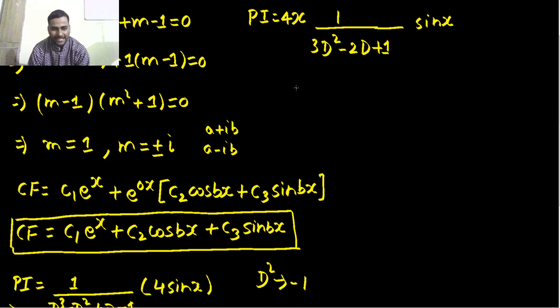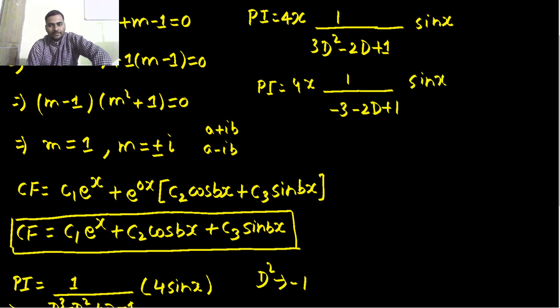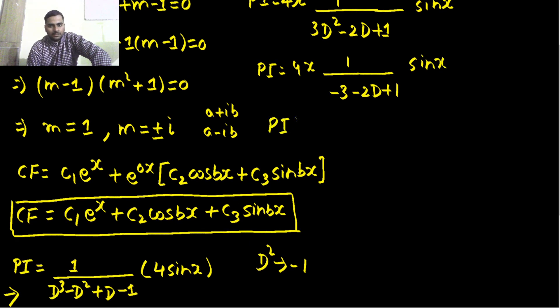Okay now again do the same thing, again replace D² by -1. If you do that this time you are getting -3 - 2D - 2D + 1 so you are getting -2D - 2 that is clearly not equal to 0 but yes that needs some simplification for us.